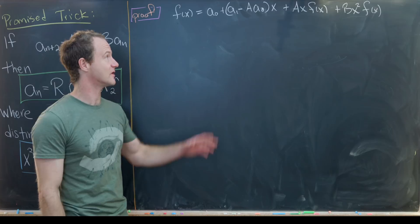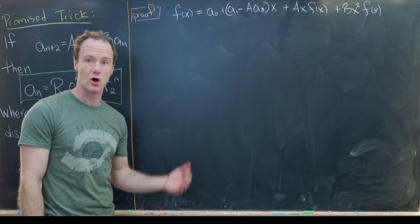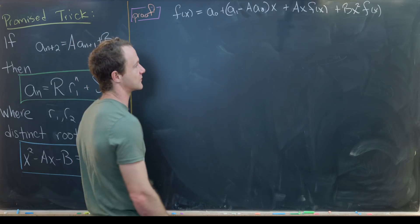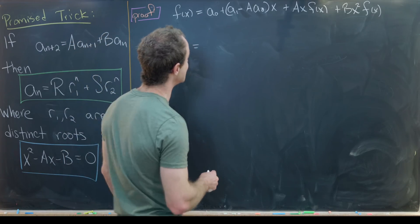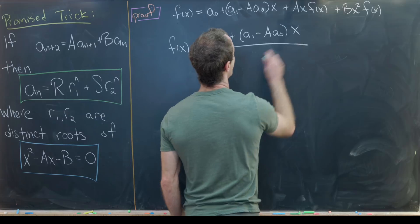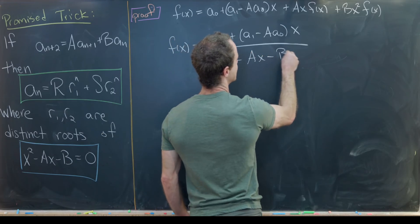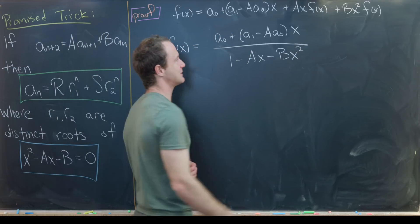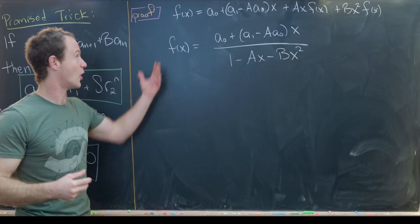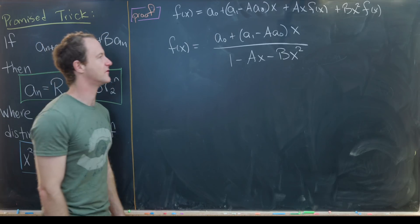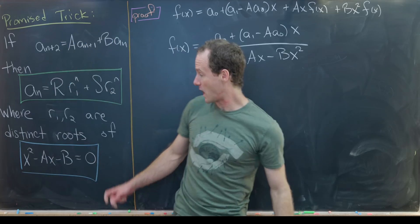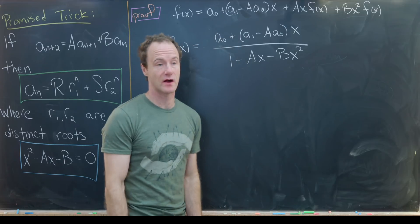The last calculation gave us an equation we can solve for f(x), our generating function for the recursively defined sequence. Moving terms and factoring, we get f(x) = (a₀ + (a₁ - A·a₀)x) / (1 - Ax - Bx²). We have a linear polynomial in the numerator and a quadratic in the denominator.